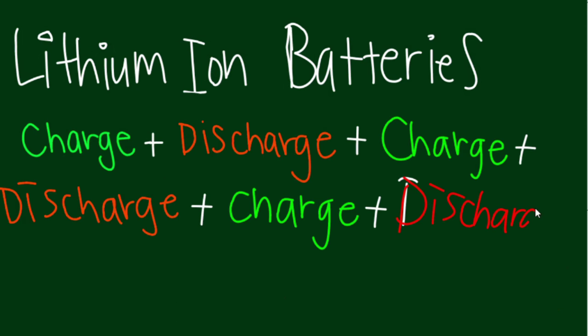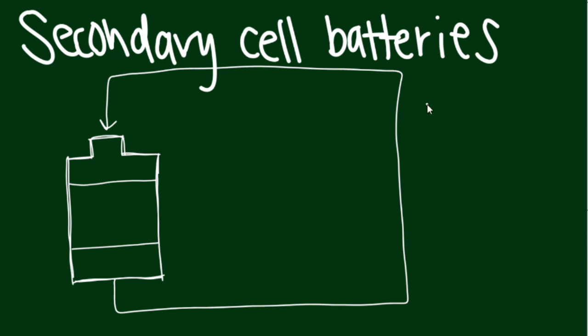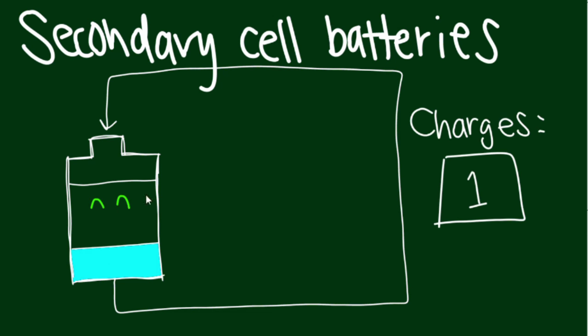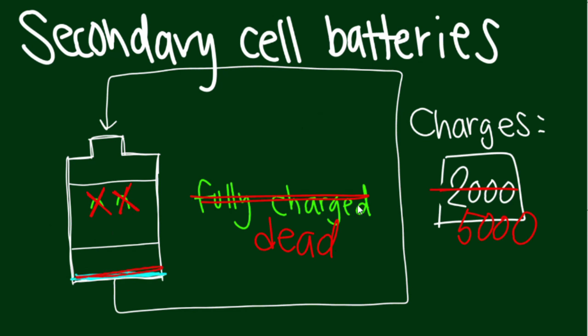However, even rechargeable batteries eventually die. Over time, as the number of charge cycles increase, the repetition of the redox reaction causes chemical damage to the metals, lowering their capacity.